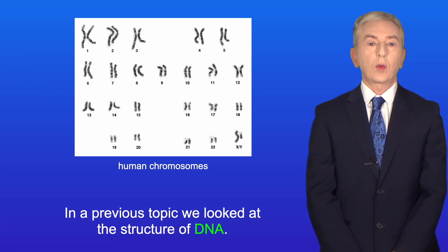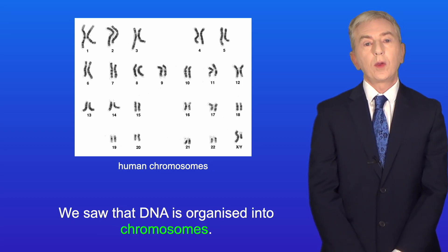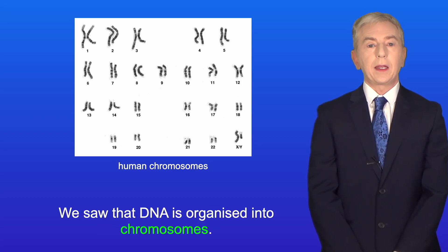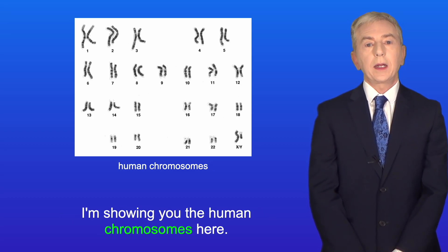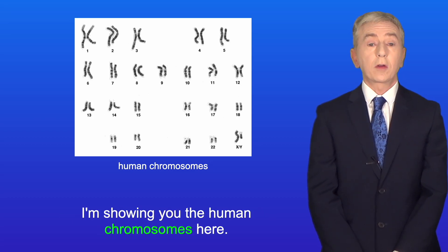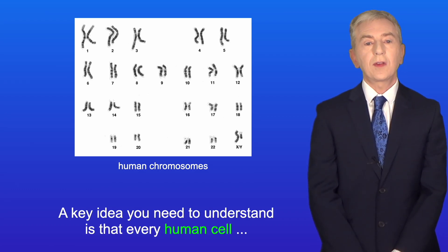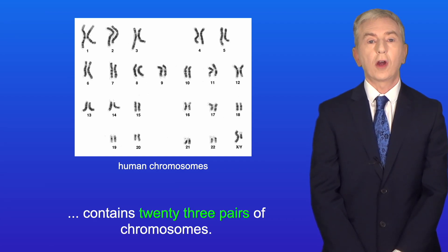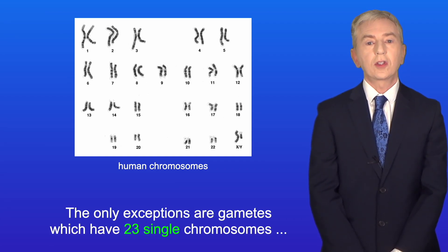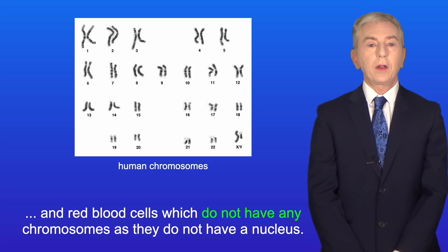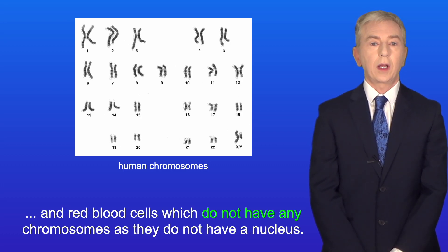In a previous topic we looked at the structure of DNA. We saw that DNA is organized into chromosomes — I'm showing you the human chromosomes here. A key idea you need to understand is that every human cell contains 23 pairs of chromosomes. The only exceptions are gametes, which have 23 single chromosomes, and red blood cells, which do not have any chromosomes as they don't have a nucleus.